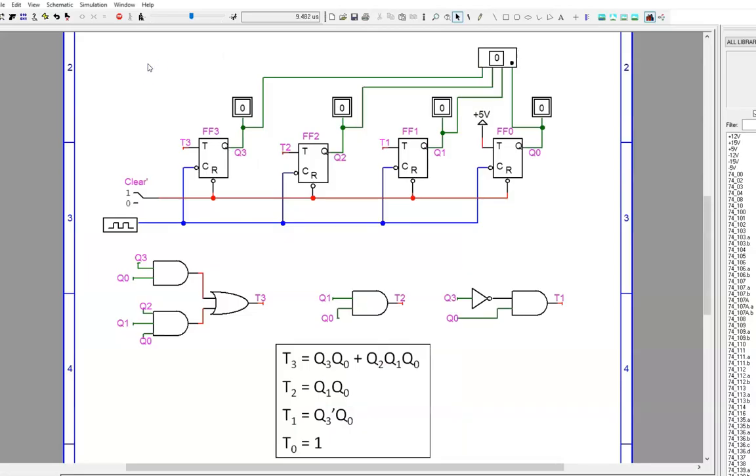With those equations we can build the circuit. Let's see it in action in the simulator. The next state logic down here takes the present count and uses that to send the next count instructions to the flip flops. Notice that, as usual, the least significant bit is toggling on every clock cycle.